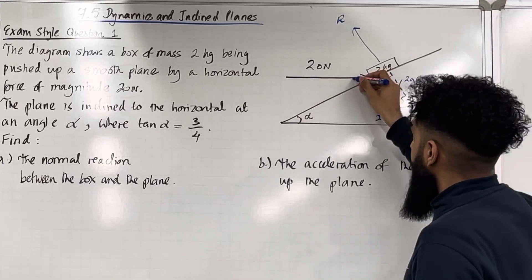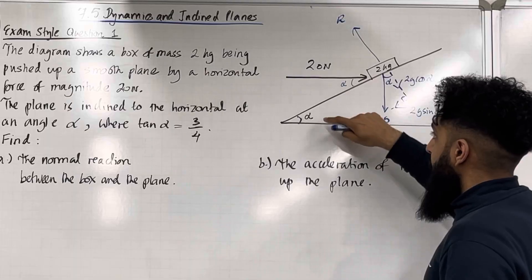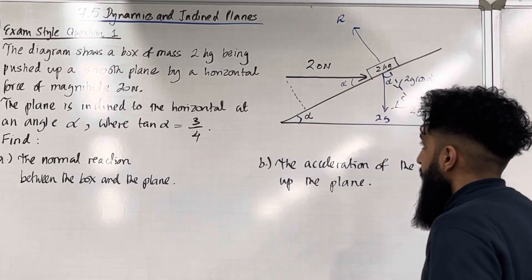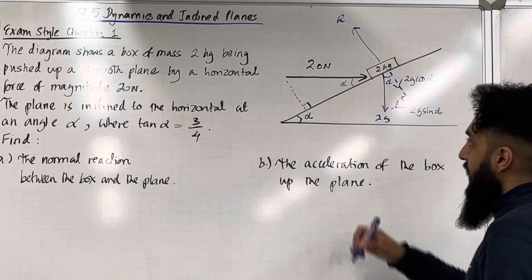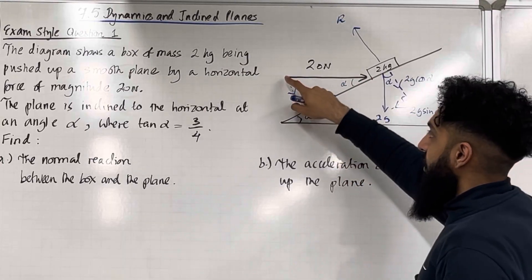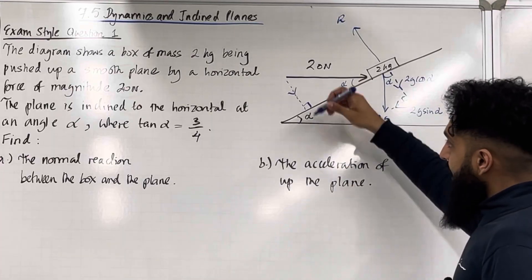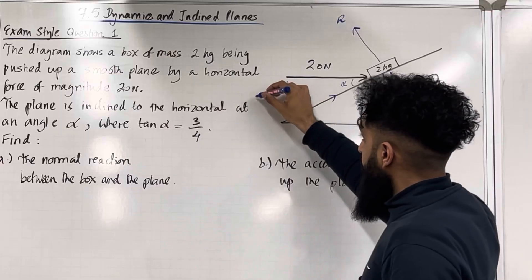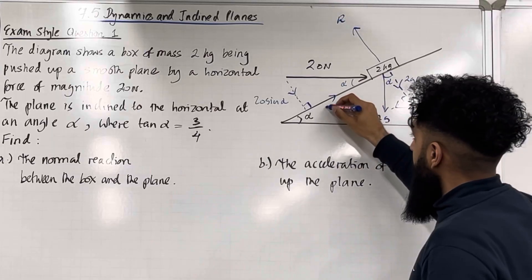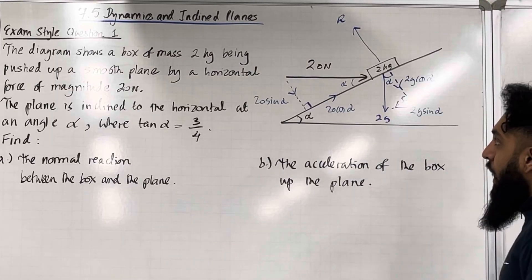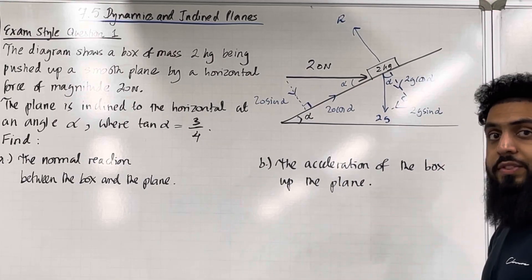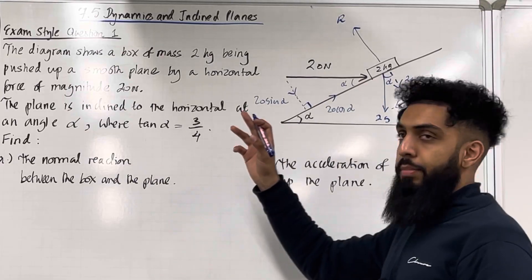For this horizontal force of 20 newtons, this particular angle over here is alpha. Alternate angles are equal, so since this is alpha, this is also alpha. We can drop a perpendicular to the plane to give a right angle triangle. The 20 newtons is going into the box — this component force is 20 sin alpha because it's the opposite, and this component force is 20 cos alpha because it is the adjacent. Notice that there is no friction labelled because we have a smooth plane — there is no friction.